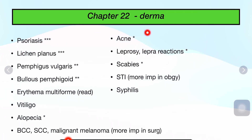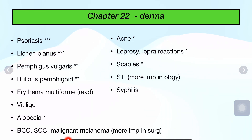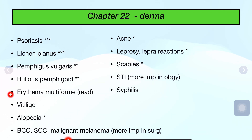Then comes Chapter 22, Derma. One short question is compulsory, so prepare it — with derma it will be complete. Topics include: psoriasis, lichen planus, pemphigus vulgaris, pemphigoid, alopecia, acne, scabies, leprosy (a little more important), erythema multiforme, vitiligo, basal cell carcinoma, squamous cell carcinoma, and malignant melanoma. STI and syphilis are a little less important. BCC, SCC, and malignant melanoma are more important. Derma can be covered easily and is very high-yielding since one question comes from a limited number of topics.